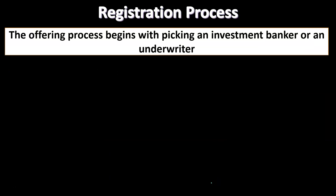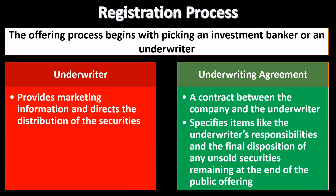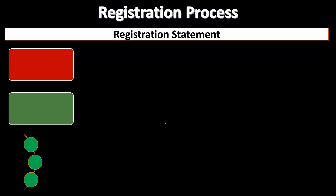The offering process begins with picking an investment banker or an underwriter. The underwriter provides marketing information and directs the distribution of the securities. The underwriting agreement is a contract between the company and the underwriter that specifies items like the underwriter's responsibilities and the final disposition of any unsold securities remaining at the end of the public offering.